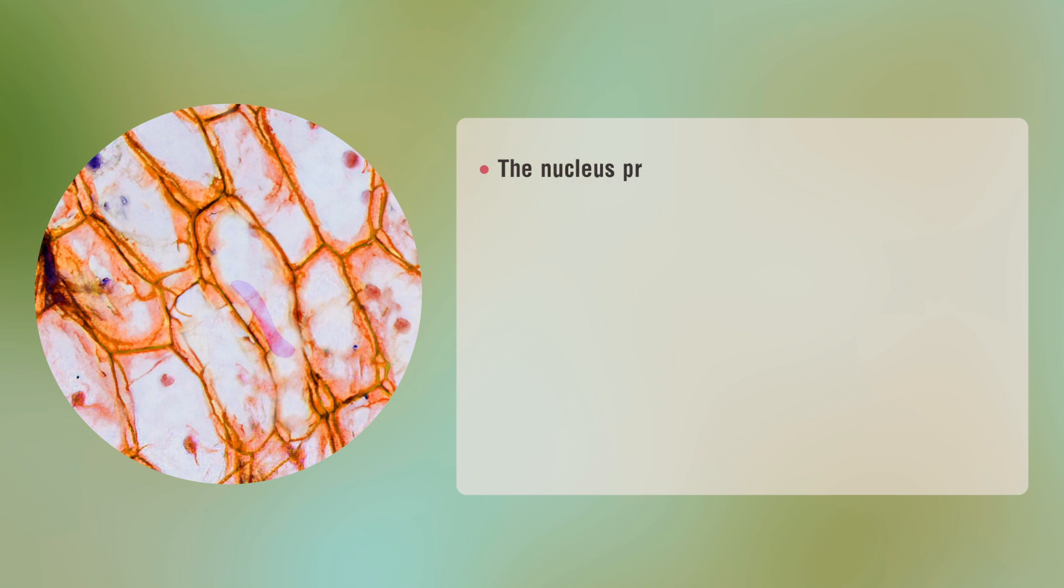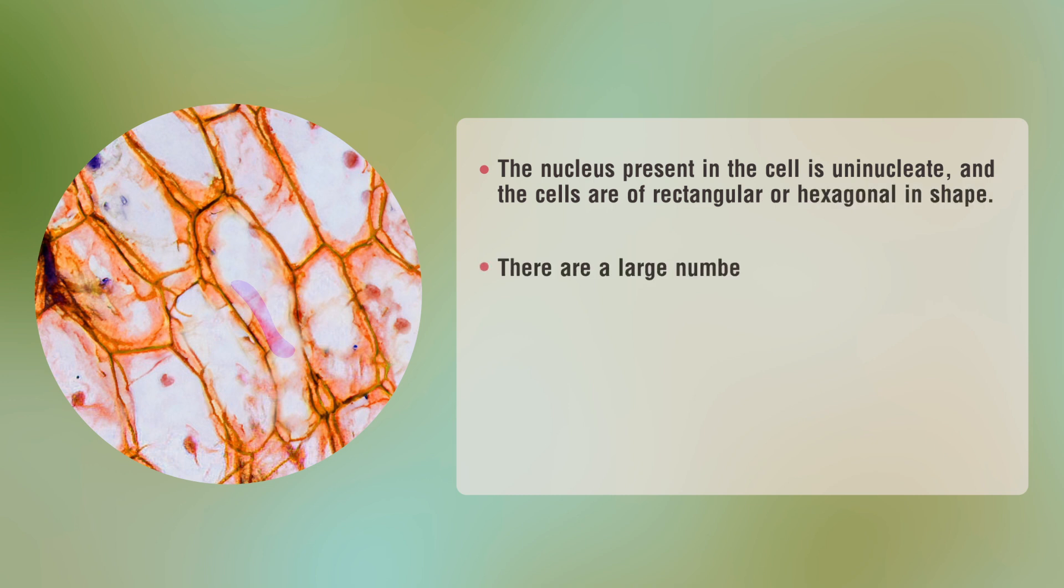The nucleus present in the cell is uninucleate and the cells are rectangular or hexagonal in shape. There are a large number of regularly shaped cells lying side by side. A distinct nucleus is present on the periphery of each cell.